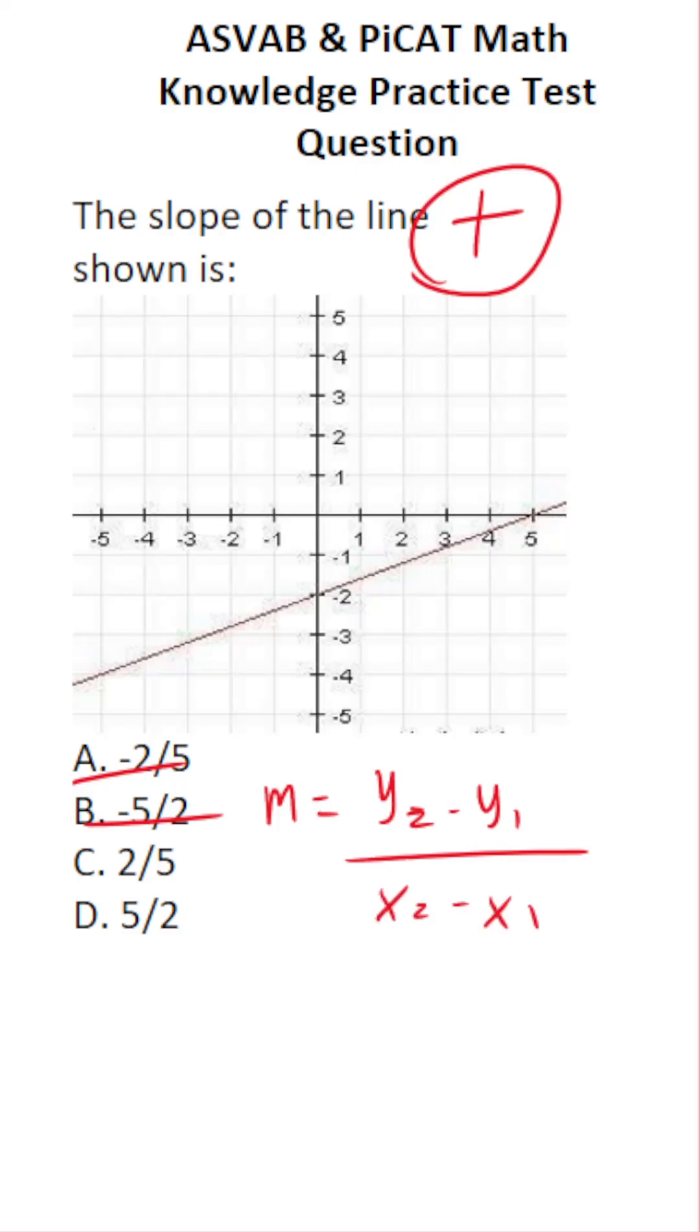Well, where do we get these values from? We get them from the ordered pairs on the line. So I'm going to pick some easy values here. What is this point on the line? That is going to be 0, negative 2. And what is this point on the line? That is 5, 0.